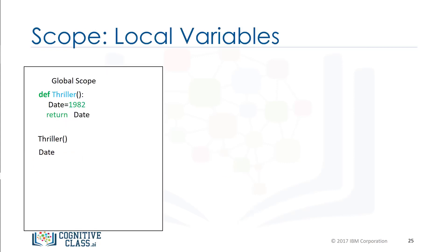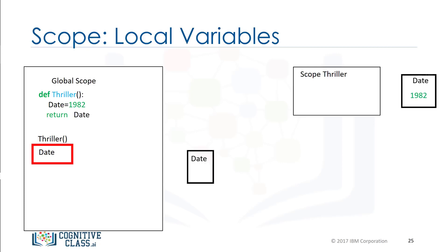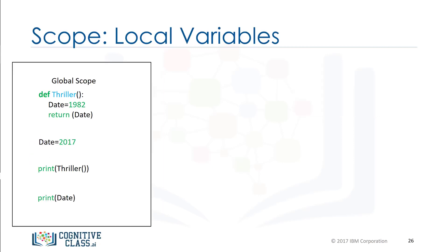Local variables only exist within the scope of a function. Consider the function thriller. The local variable date is set to 1982. When we call the function, we create a new scope. Within that scope, the value of date is set to 1982. The value of date does not exist within the global scope. Variables inside the global scope can have the same name as variables in the local scope, with no conflict.